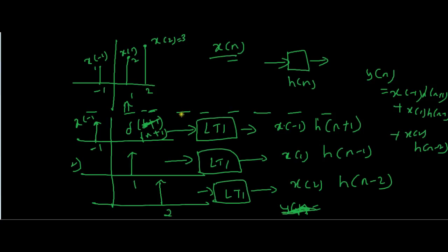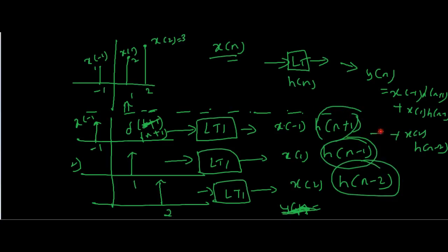The calculations done below the dotted lines are equivalent to giving X(N) directly to the LTI system — we end up with the same output. In general, representing the amplitudes as X(minus 1), X(1), X(2) is nothing but X(K), and the corresponding responses H(N plus 1), H(N minus 1), H(N minus 2) are the time-shifted impulse responses. Adding all of these gives us the final convolution equation.